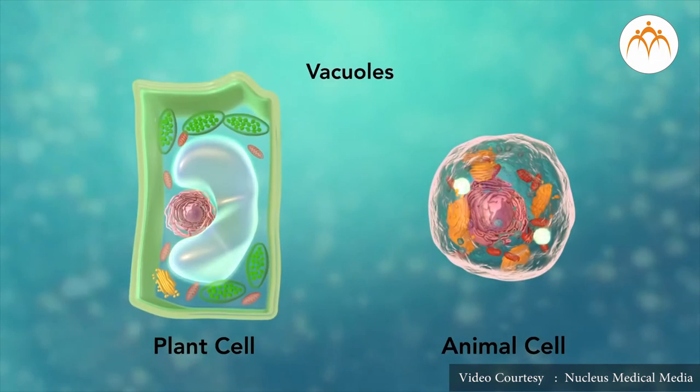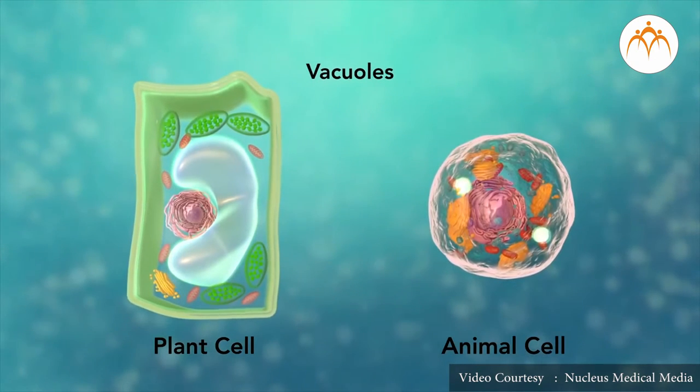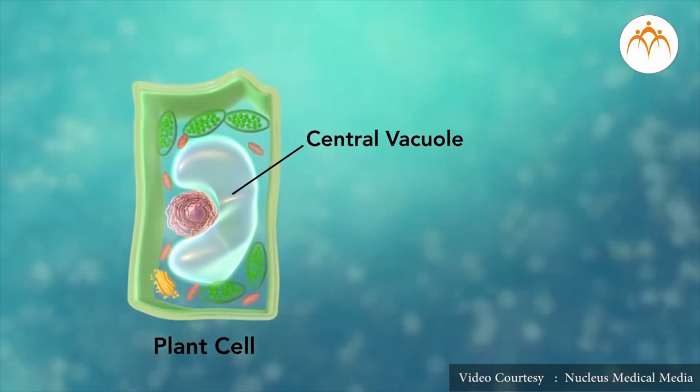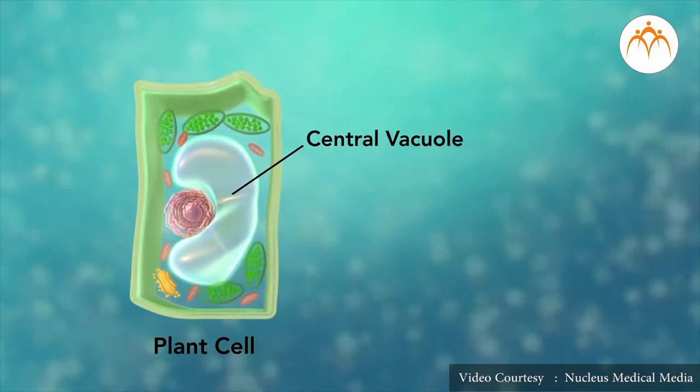The animal and plant cell have different size and number of vacuoles. Compared to animals, plant cells have larger vacuoles.